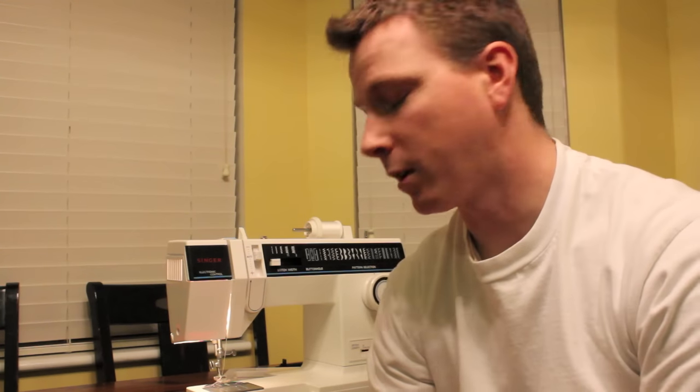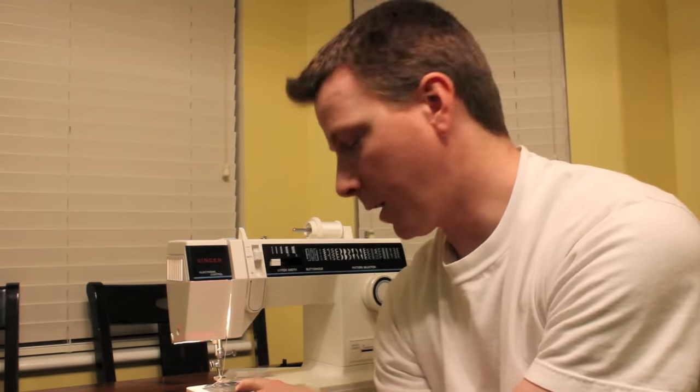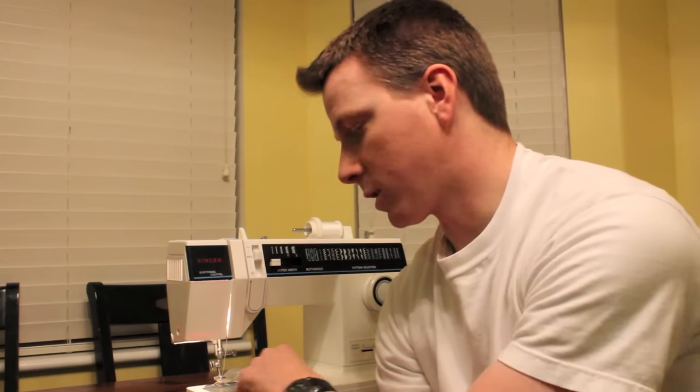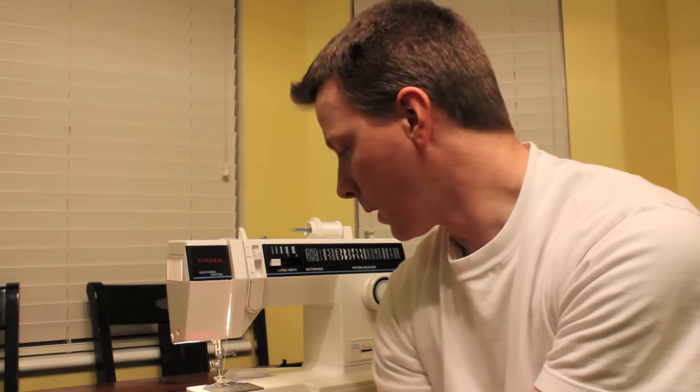The fix we'll be doing today is for when the hook - the circle with the hook on it underneath - isn't grabbing onto the thread to make the loop so it sews properly. In my case, it's just spinning around and the thread's not grabbing onto anything. That's what we're going to be fixing today. Let's go ahead and get started.